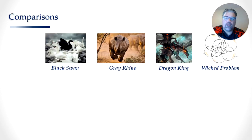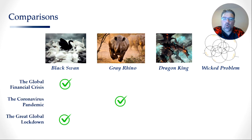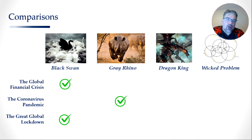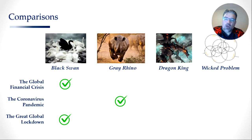Comparing these four risk phenomena to the macro threats we've experienced in recent times, we may see some interesting patterns. The GFC was definitely a black swan — the sheer number of institutions caught by surprise and bankrupted by it suggests it was unforeseeable. The coronavirus, on the other hand, was definitely a gray rhino. As I said, there were decades of warning it was coming, and for the 20 years leading up to 2020 there were numerous emerging signals telling us a global pandemic was coming. We just chose to ignore it.